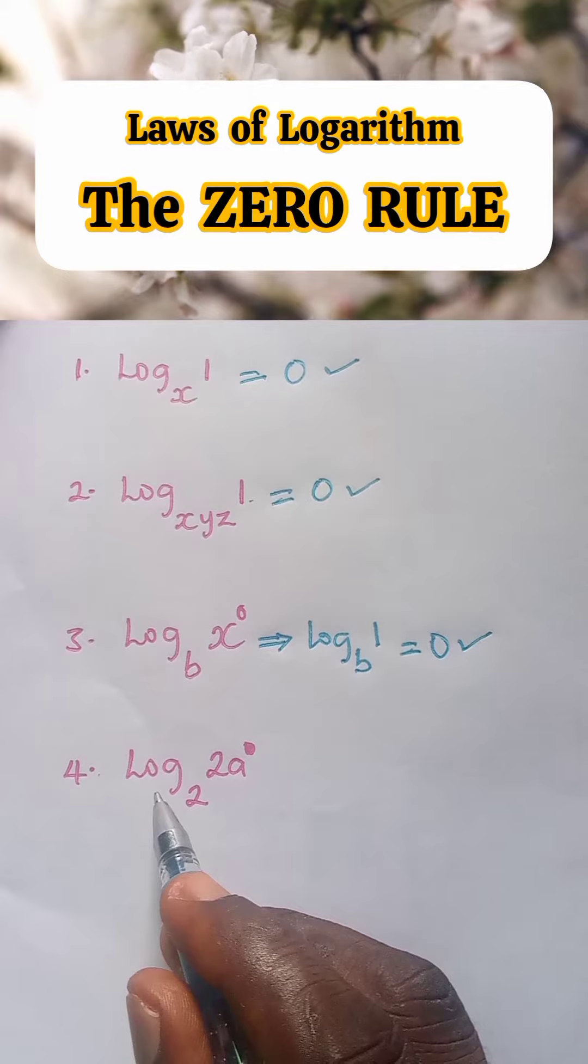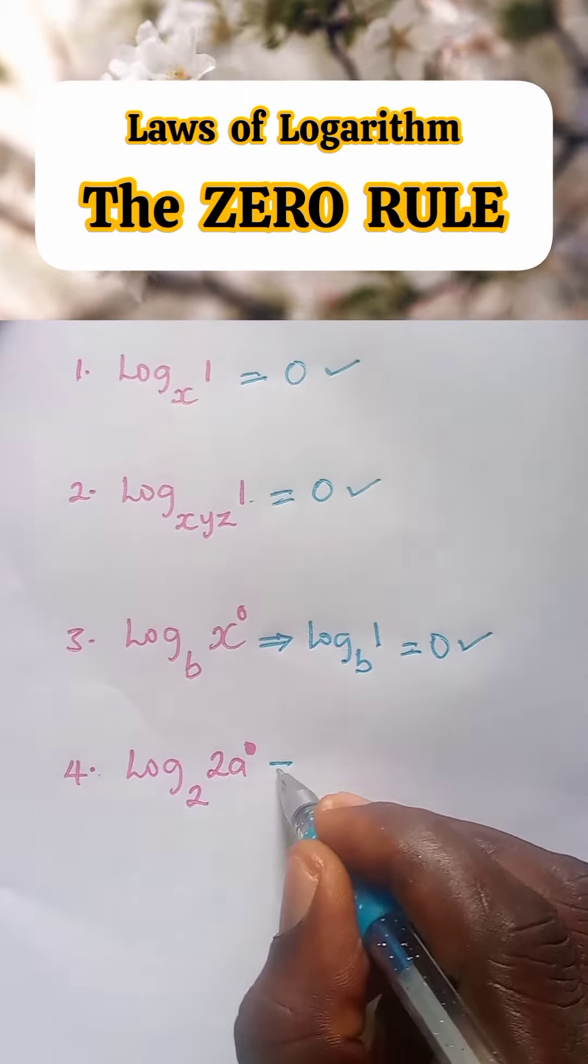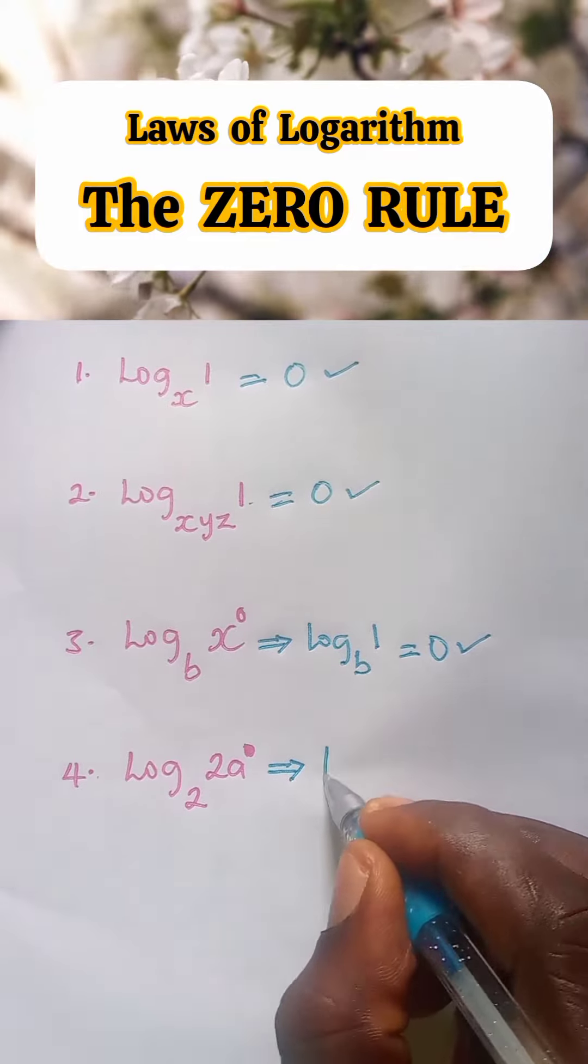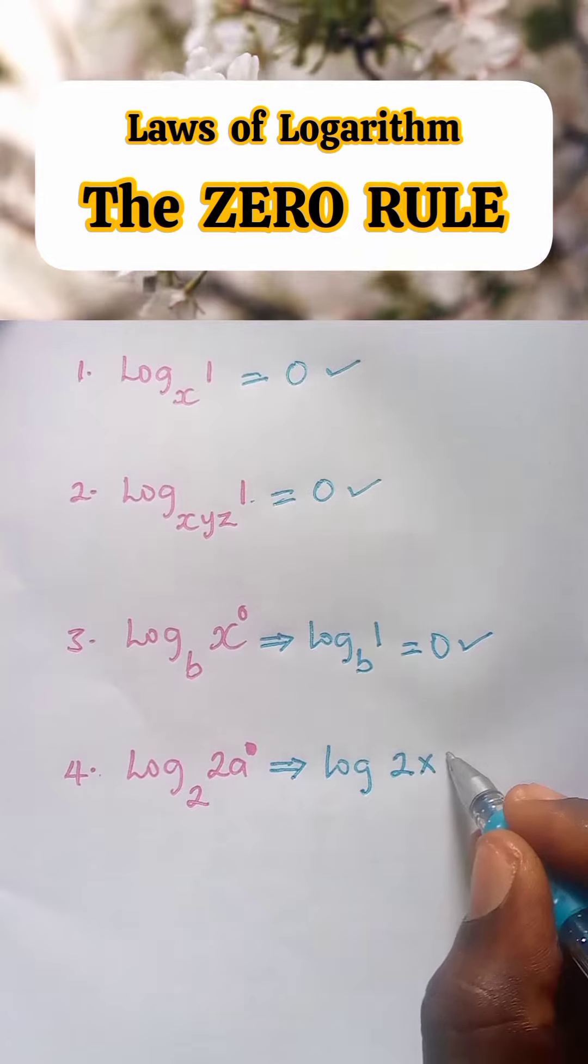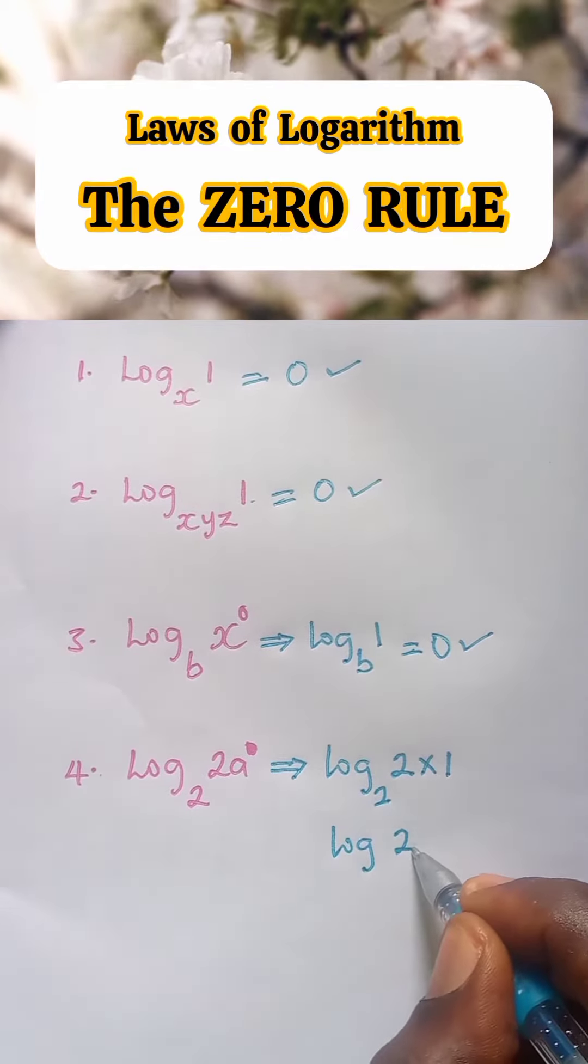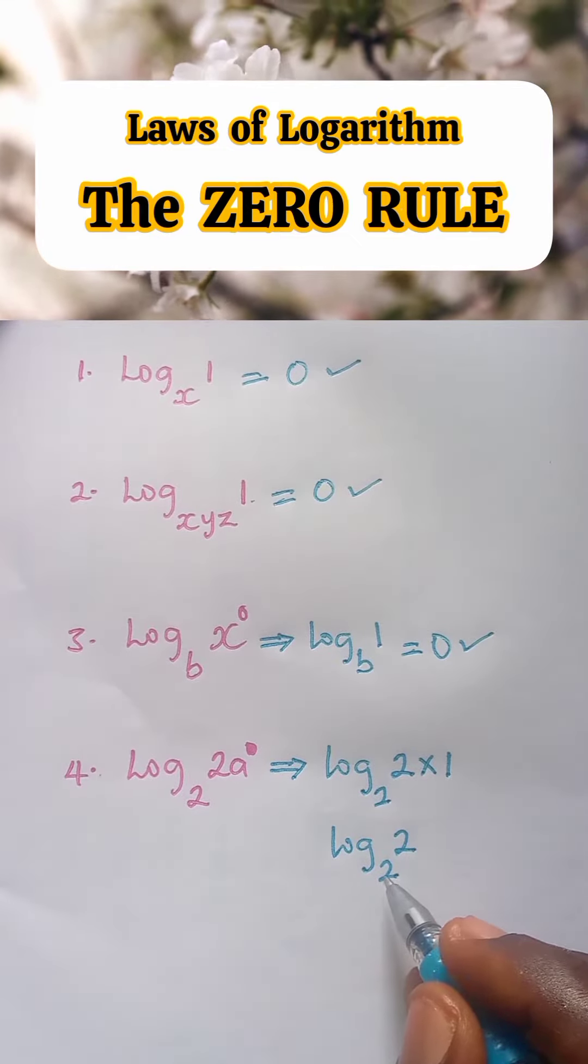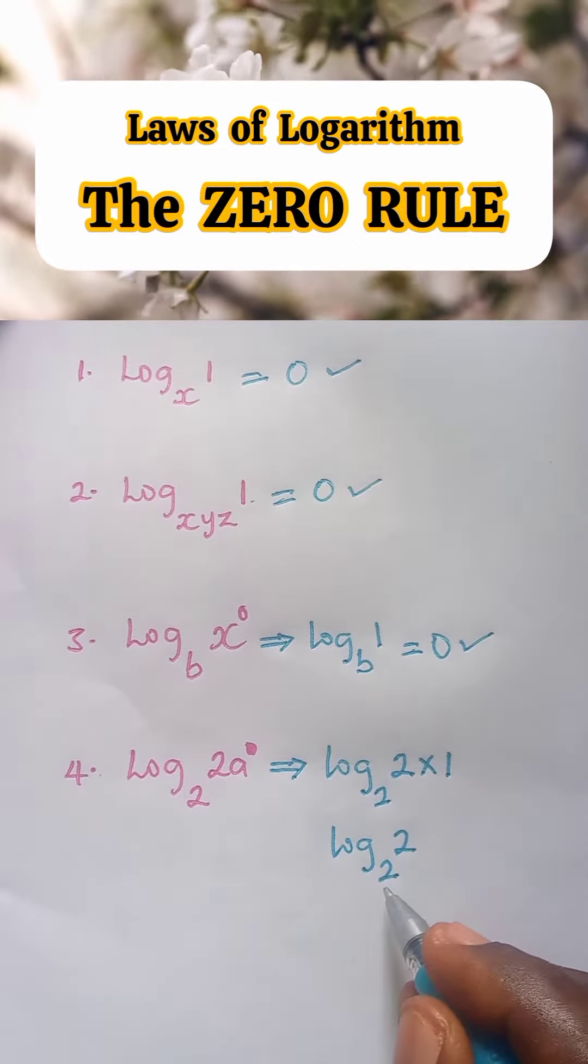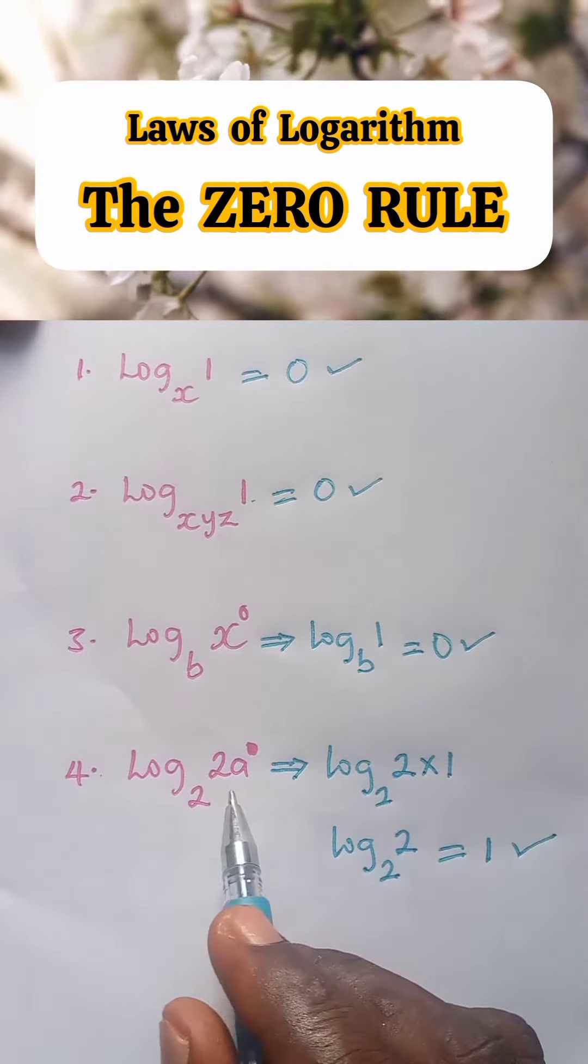Number four, log 2a raised to power zero to base 2. We have it as log two times a raised to power zero is one to base two, which is log two base two, because two times one is two. The log reading of a number to its own base is equal to one. So log two base two is equal to one, and that is the answer. We can also use a second method.